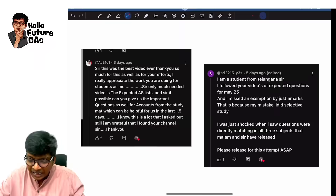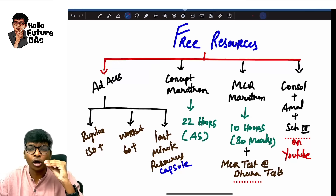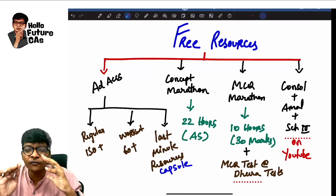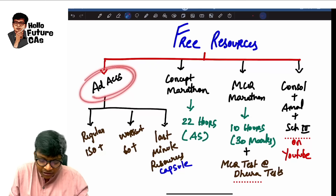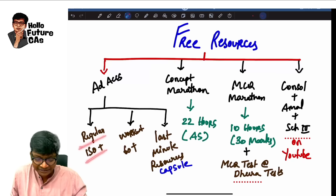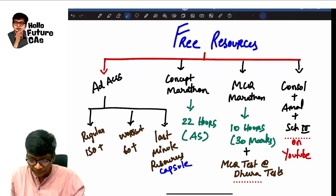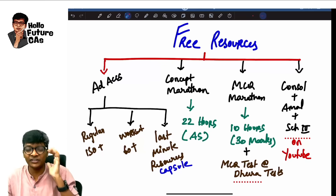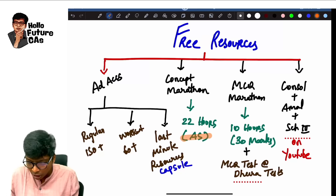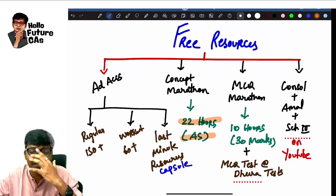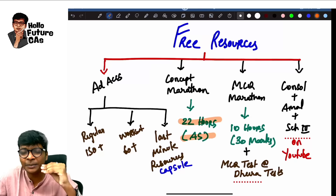Before I explain this in detail, I want to share a few free resources. Everything is completely free — not asking you to buy anything — but very important for you to follow. Our usual advanced accounting regular class is 150 plus hours, workout batch is 60 plus hours. We don't have time for that now, so we have last minute resources. First: a concept marathon for advanced accounting based on accounting standards for 22 hours.